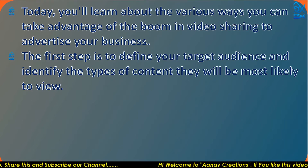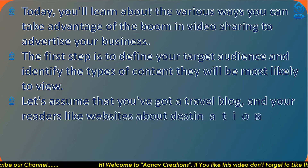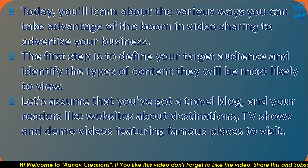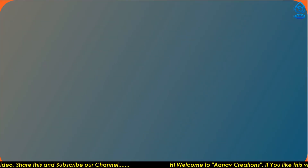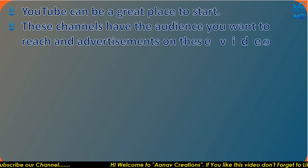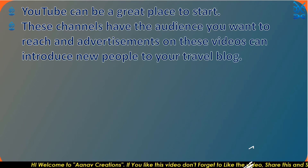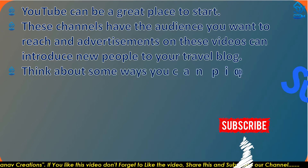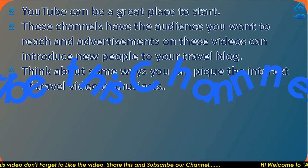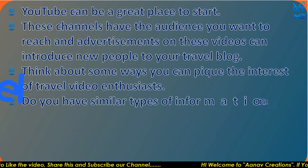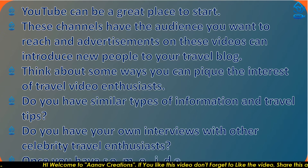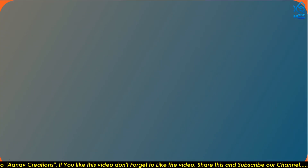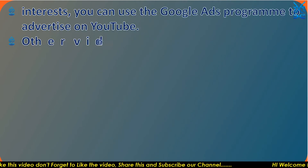The first step is to define your target audience and identify the types of content they will be most likely to view. Let's assume you have a travel blog and your readers like websites about destinations, TV shows, and demo videos featuring famous places to visit. Start by looking for video channels featuring content that matches the interests of your readers. YouTube can be a great place to start. Think about ways you can pique the interest of travel video enthusiasts — do you have travel tips, or interviews with celebrities and travel enthusiasts? Once you have ideas about your audience's interests, you can use the Google Ads program to advertise on YouTube.